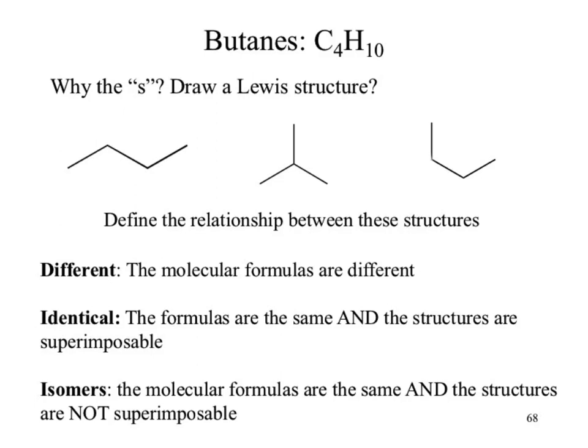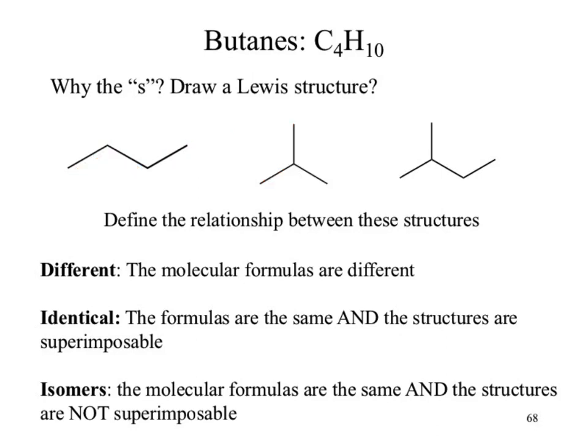Is there any way I could get those first two structures to completely overlap? If I tried to superpose them, this piece and this piece don't superimpose. There's no way I could do any rotation, spins, or flips to get them to superimpose. Which means the relationship between those two structures is isomers — we would define them as isomers.